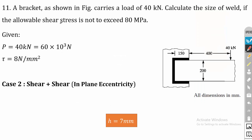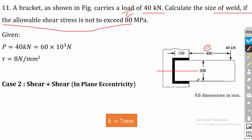The tutorial problem: a bracket as shown in the figure carries a load of 40 kN. Calculate the size of the weld if the allowable shear stress is not to exceed 80 MPa. The approach is the same as the solved problem — eccentricity is not directly given, so calculate X-bar for the C section (symmetric about x-axis, y = 200/2). Calculate tau1, then tau2, then use the combined tau_max equation. The answer is H = 7mm.